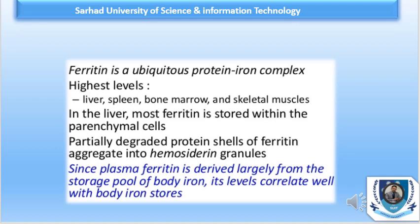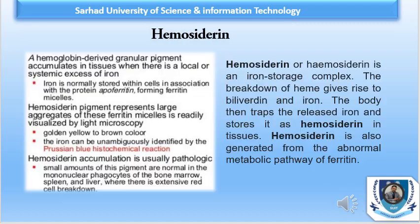In conditions associated with iron overload, serum ferritin can rise to 5,000 micrograms per liter. Ferritin is water-soluble and not visible by light microscopy. The other storage form of iron is hemosiderin, which is an aggregate of iron and protein found in the reticuloendothelial cells of bone marrow, spleen, and liver. Hemosiderin appears as golden yellow granules in the cytoplasm of cells when stained with hematoxylin and eosin.